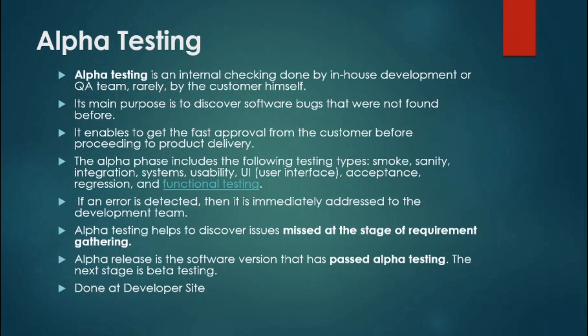In alpha testing, if any error is detected, it is immediately addressed to the developers so they can fix the defect. Alpha testing is used to discover issues that were missed at the requirement gathering phase of the SDLC or STLC.